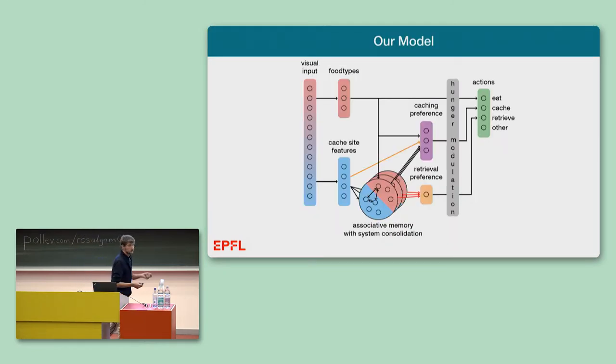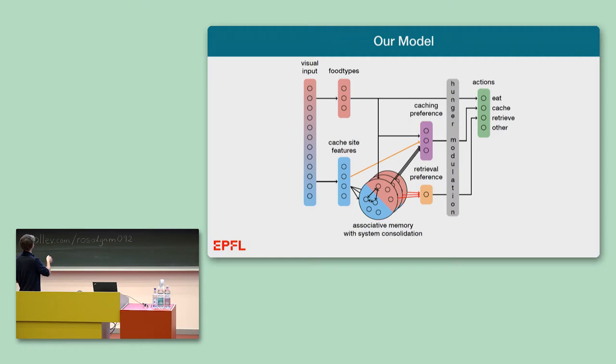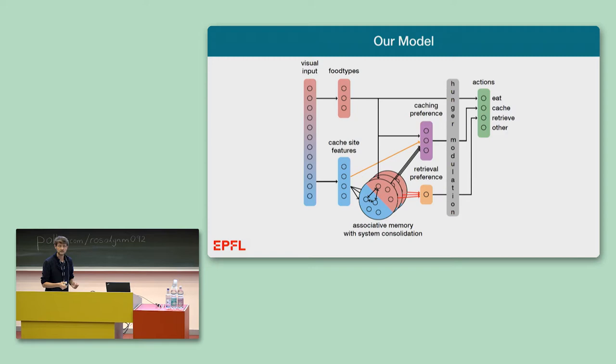We propose a memory-augmented reinforcement learning model to capture the behavior in these experiments. In our model, the probability of an action - to eat, cache, retrieve a food item, or do something unrelated to the current experiment - depends not only on the visual input from which we can extract the food types and the cache site features, but also on three internal states: the hunger variables, the state of the associative memory, and two types of plastic synaptic weights that determine the caching preference and the retrieval preferences.